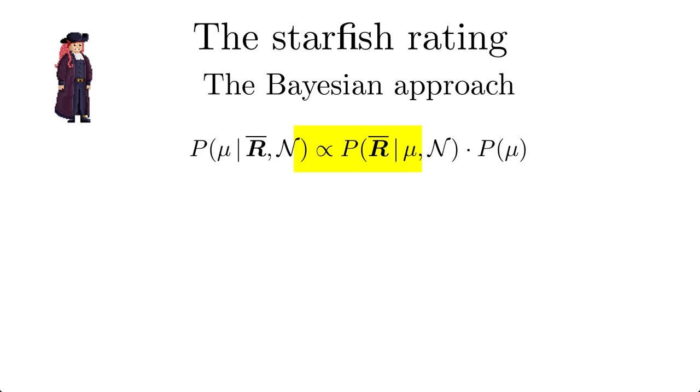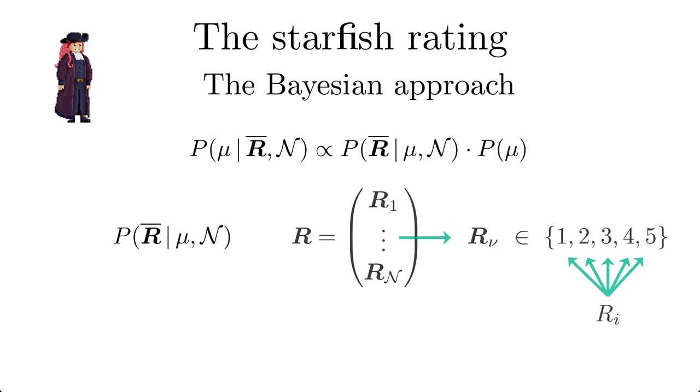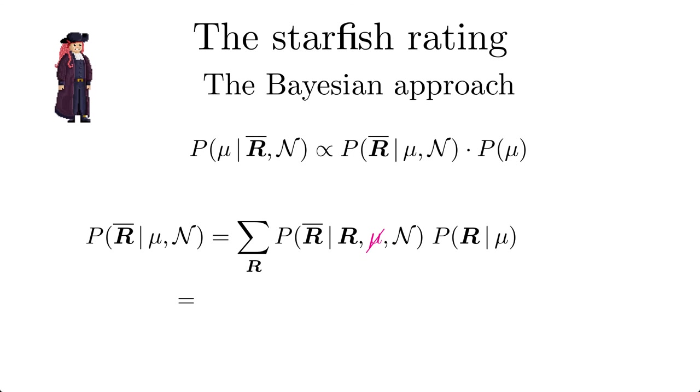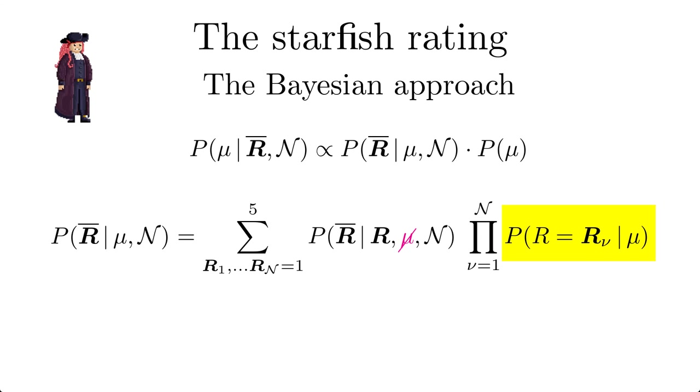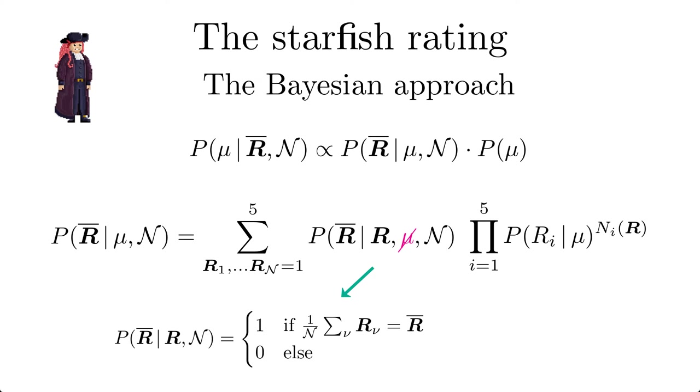To be able to compute the likelihood, we need the individual ratings R sub i of all n voters, which we introduce via the marginalization rule. Here we use the fact that the individual votes are uncorrelated. The factors in the product are nothing but the rating probability we derived in the maximum entropy section. That should be enough information for you to perform the remaining steps on the Bayesian path yourself. But don't be disappointed, the final expression has to be evaluated numerically. That's mostly the case in all real-world problems.